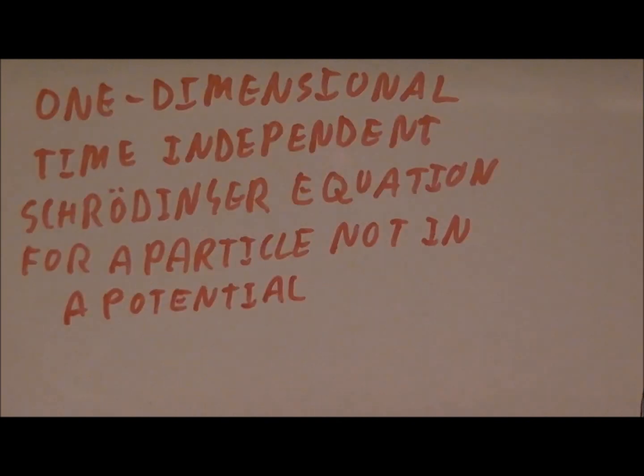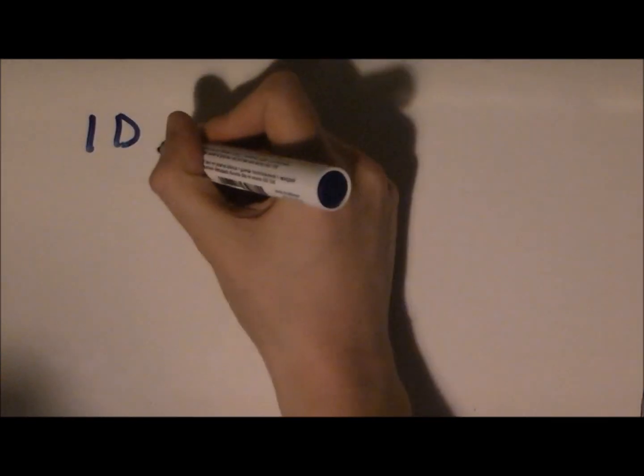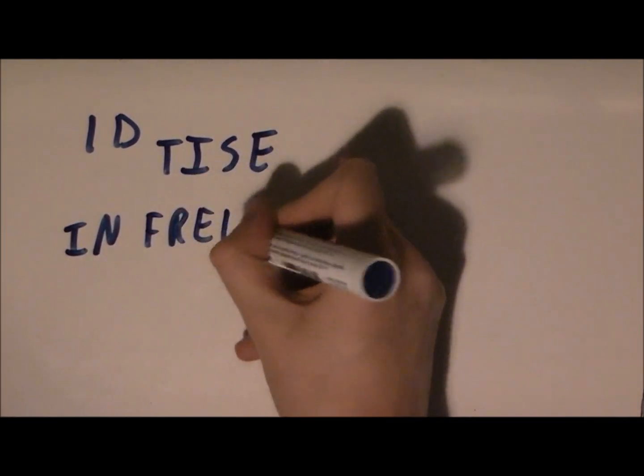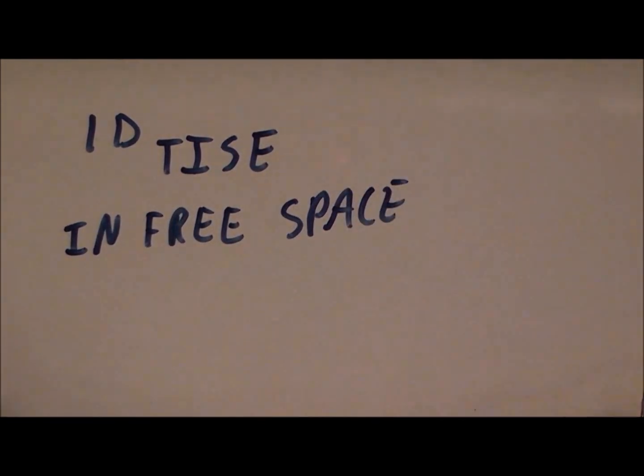And that's it. Well, sort of. Here we have the time-independent one-dimensional Schrödinger equation for a particle which is not in a potential, or 1DTISE in free space, for short. Let's try and make this equation more general. Fortunately, we've done the hardest bit.